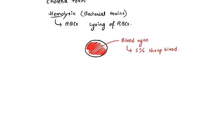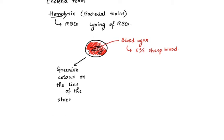There can be different kinds of hemolysis. The first kind: if you streak bacteria on the agar plate and after the bacteria grow you see a greenish color on or around the line of the streak, we call it alpha hemolysis.